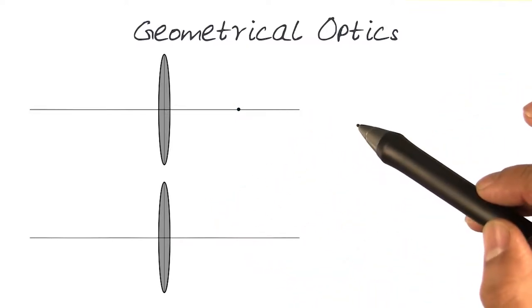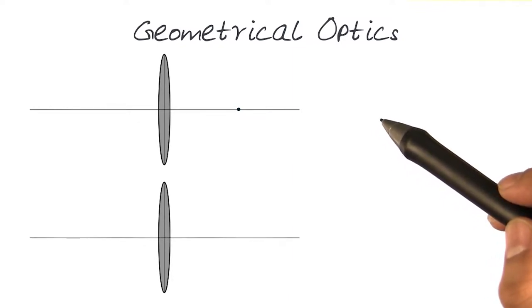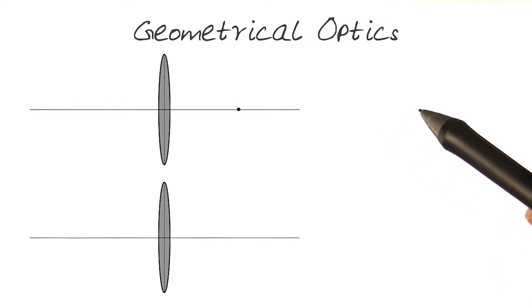Now I'm going to introduce some simple concepts of geometrical optics to help us understand how light traverses through the lens and what happens on the other side of the lens after light has passed through it.